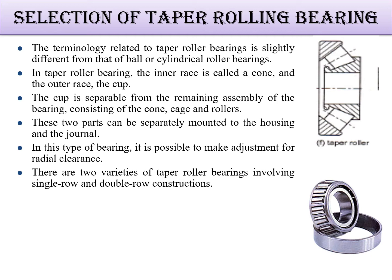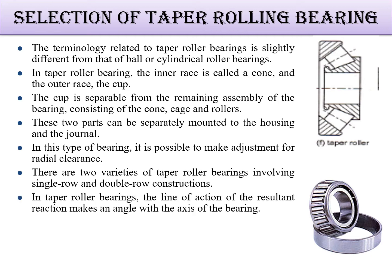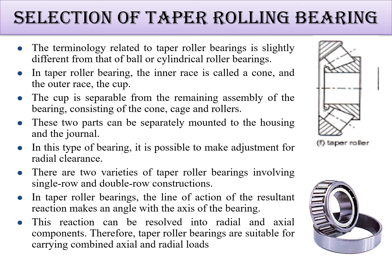There are two types: single row and double row. Based on heavy load, we have to select double row; for light or medium load, single row can be used. In tapered roller bearing, the line of action resultant means there are two types of loading conditions — radial and thrust — and both types of load can be sustained.